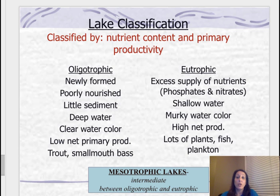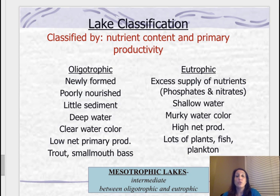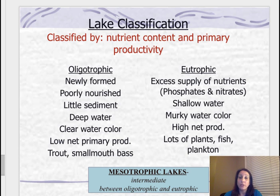Then you have eutrophic — an excess supply of nutrients with high levels of nutrients and high NPP. Sometimes you can get too much, and that's where you have eutrophication. In eutrophic conditions, you have excess phosphates and nitrates, shallow water, and lots of plants, fish, nekton, and plankton.